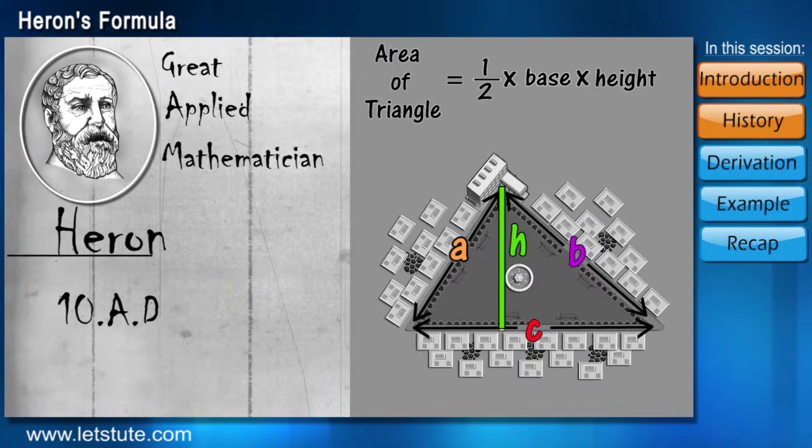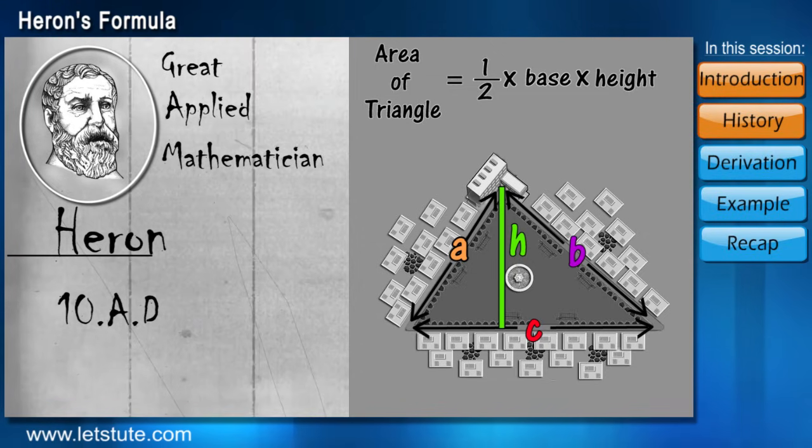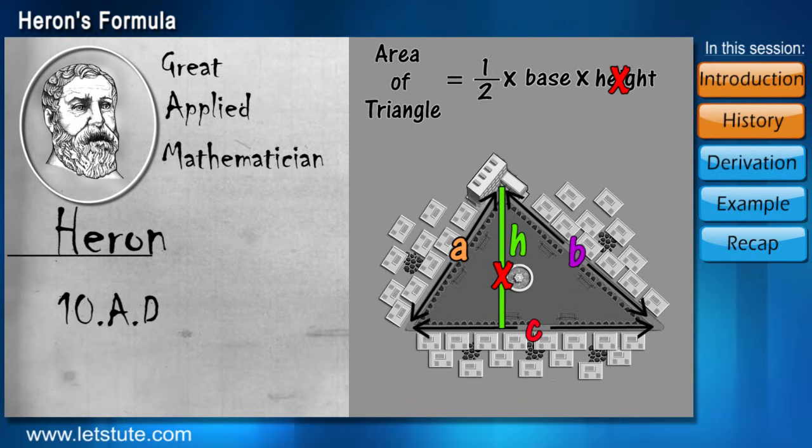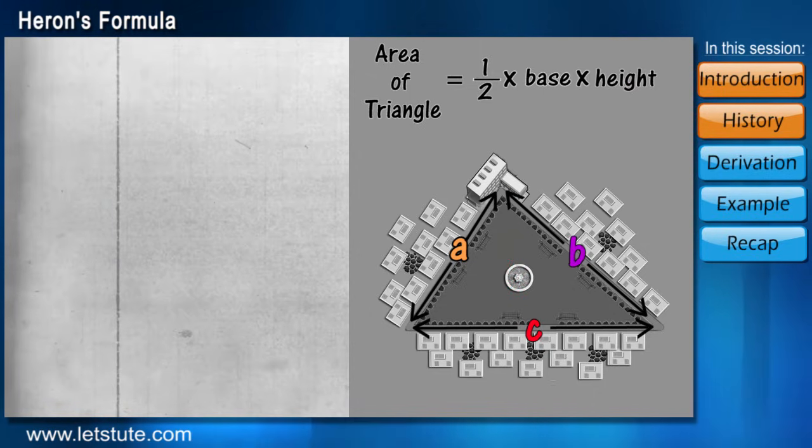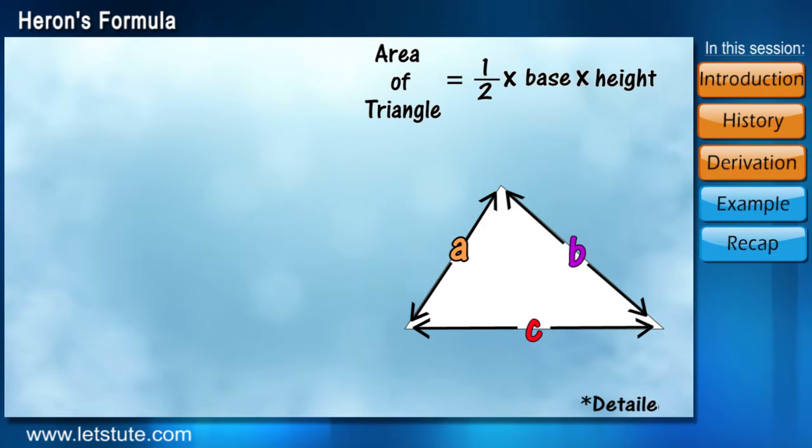He tried to replace the value of h in terms of a, b, and c so that we do not need the value of h to calculate the area. Let's have a brief look at how the formula was derived. First, we take any random triangle and let the side lengths be a, b, and c.